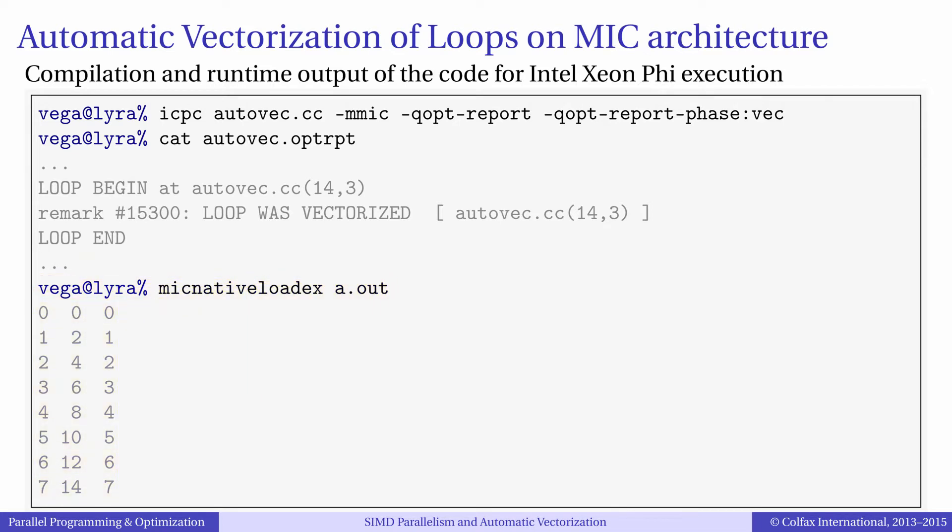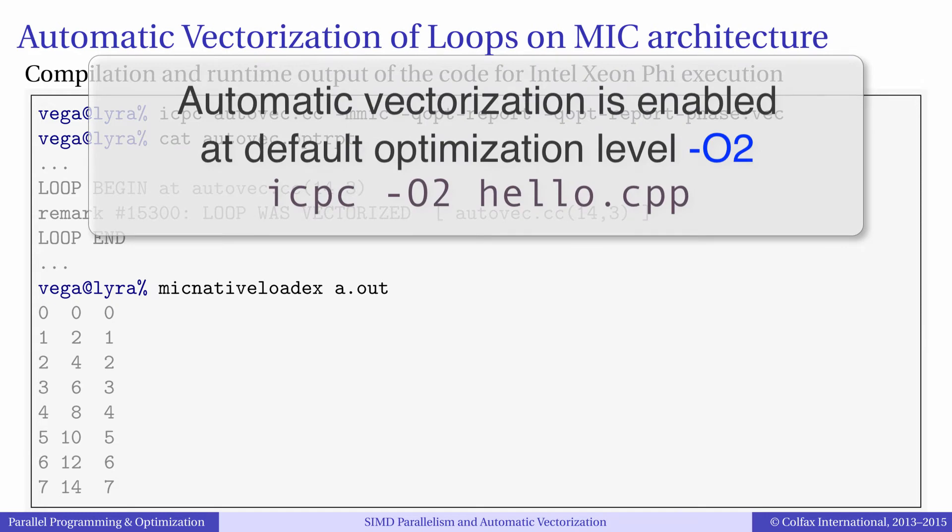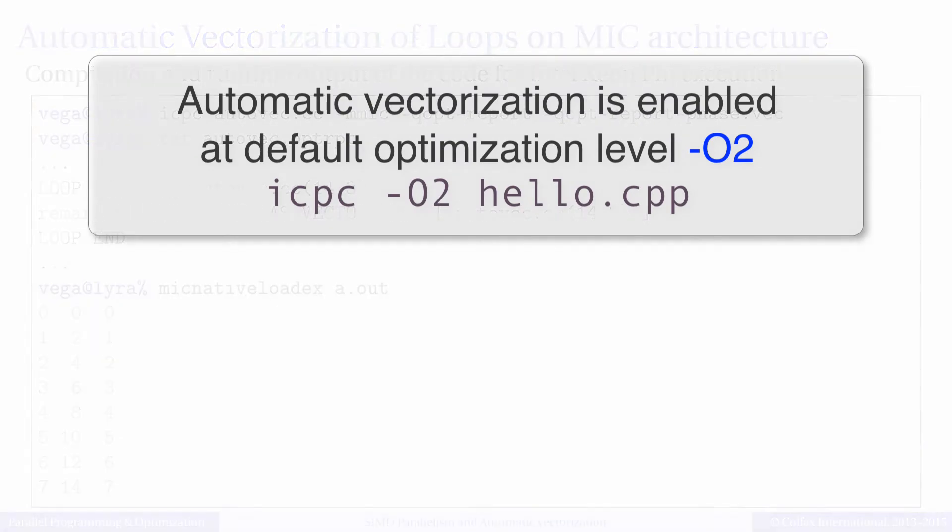Optimization report is the most direct way to tell if your application is using vector instructions. Automatic vectorization is enabled at the default optimization level dash capital O2.